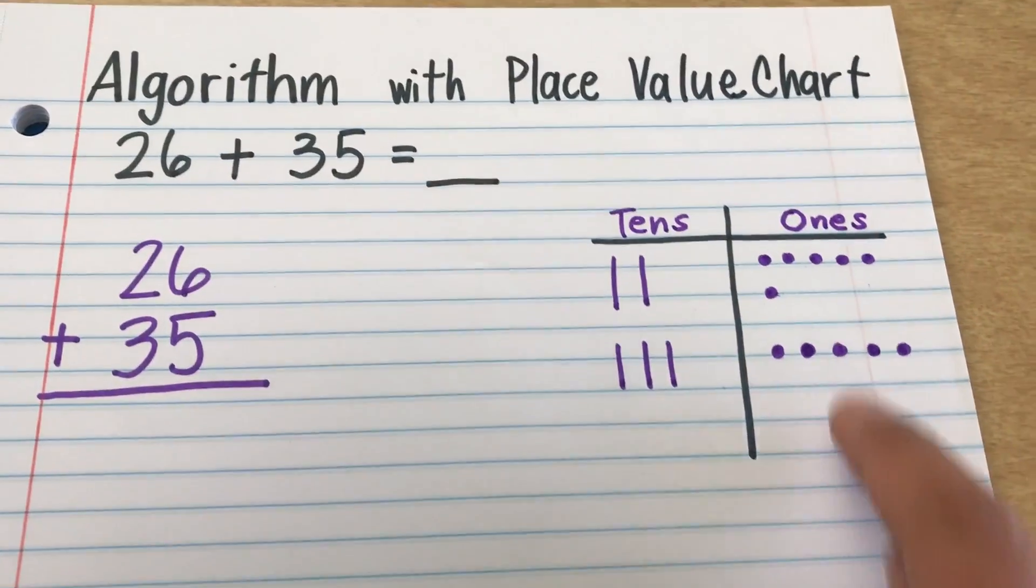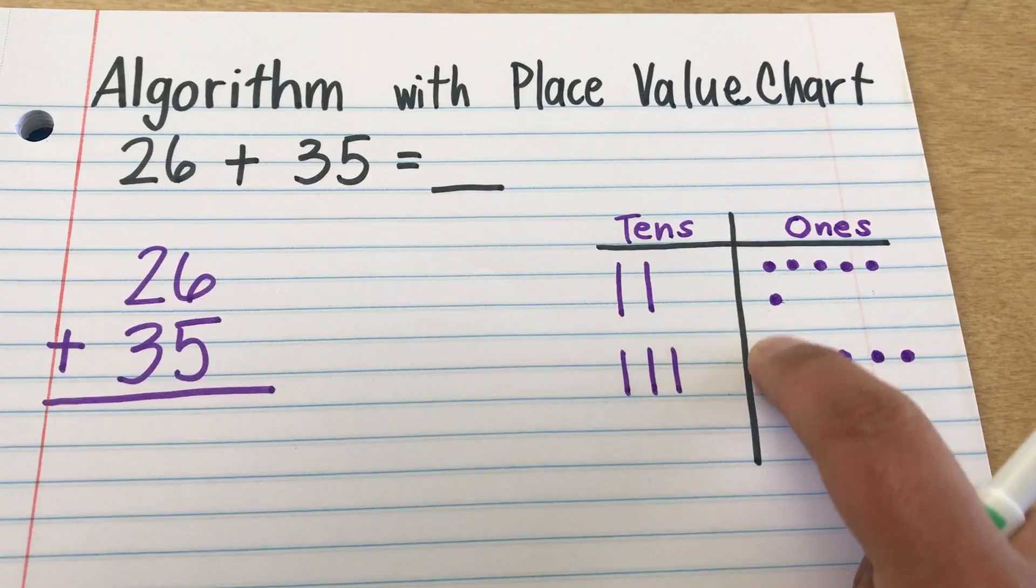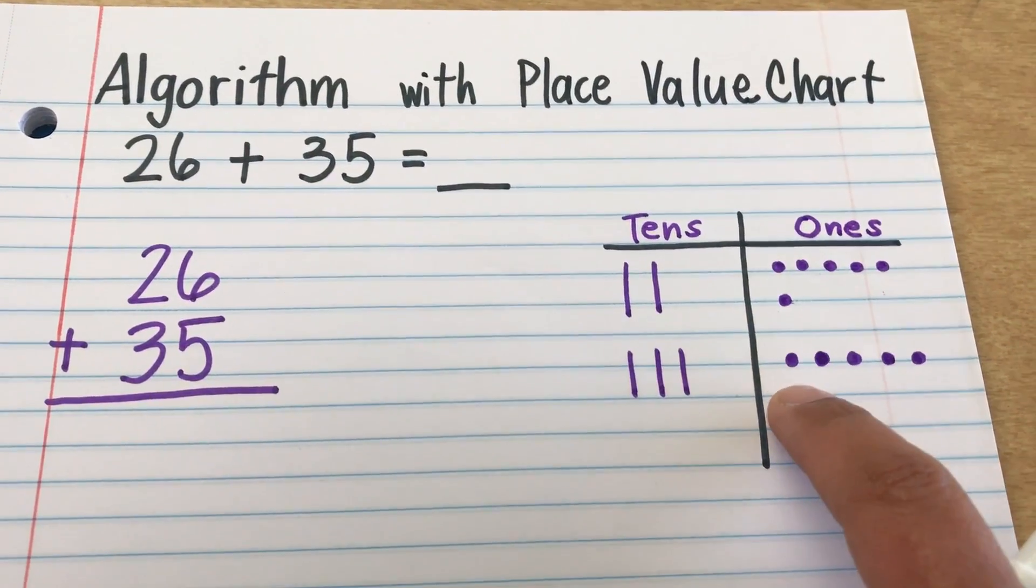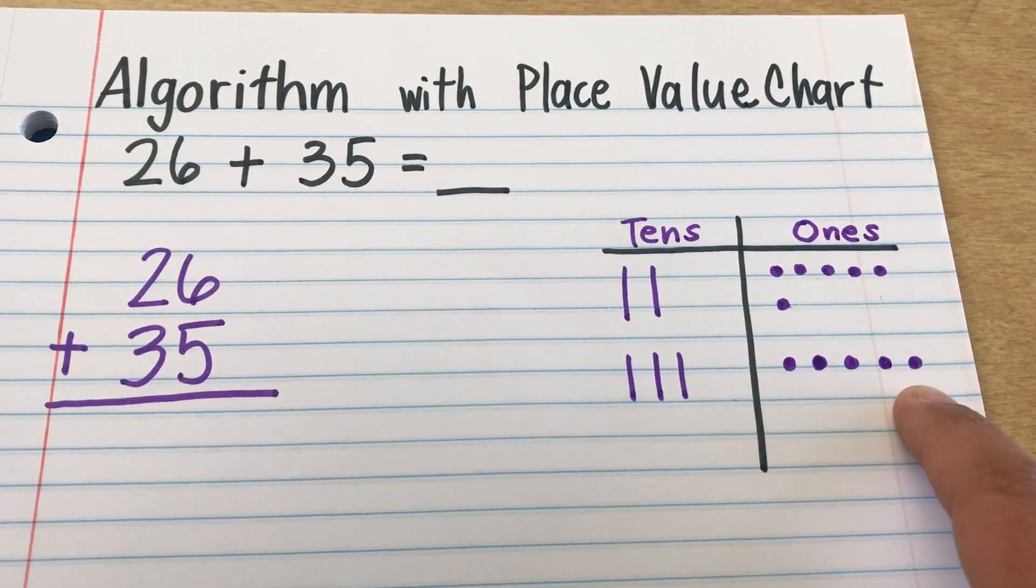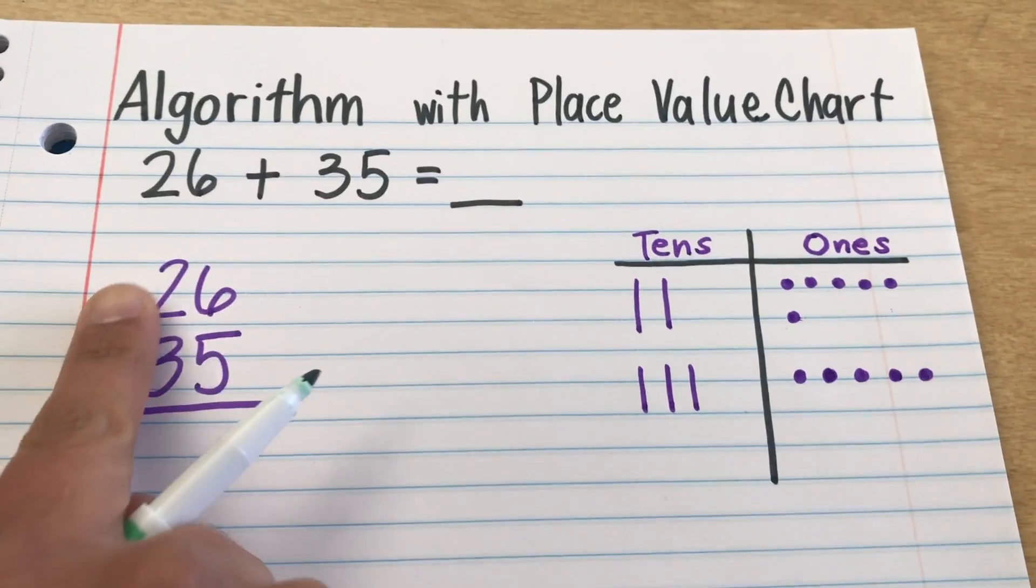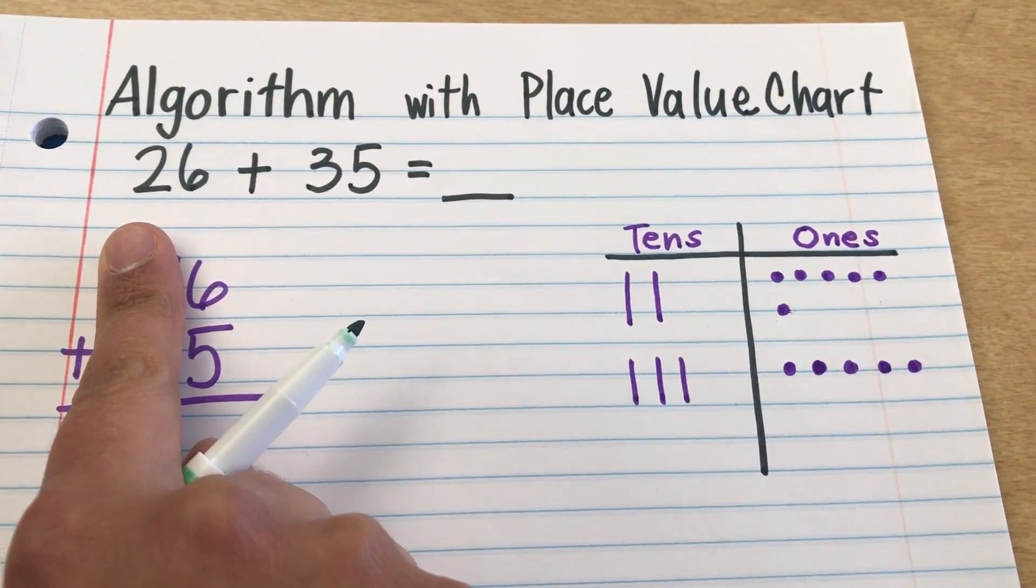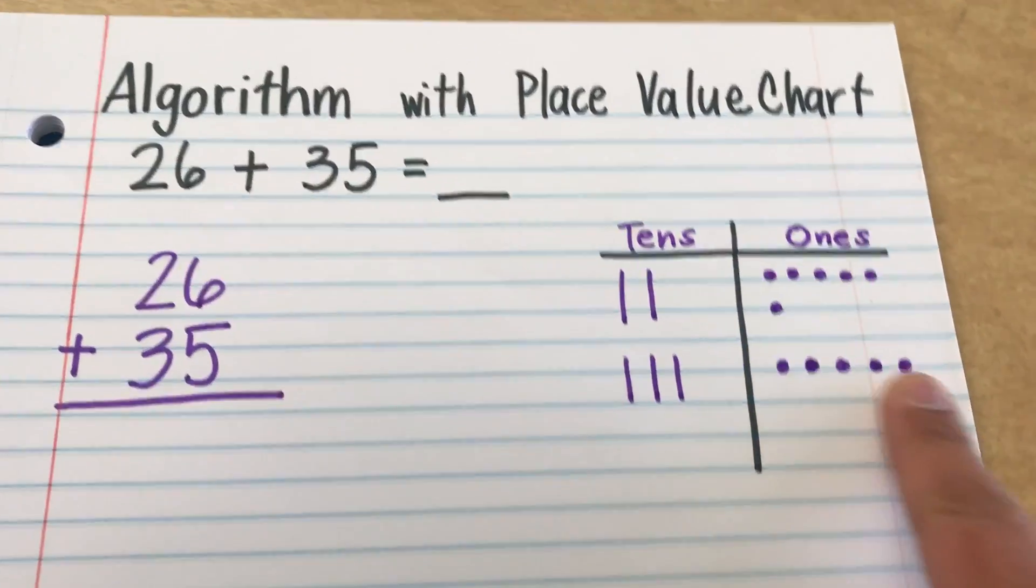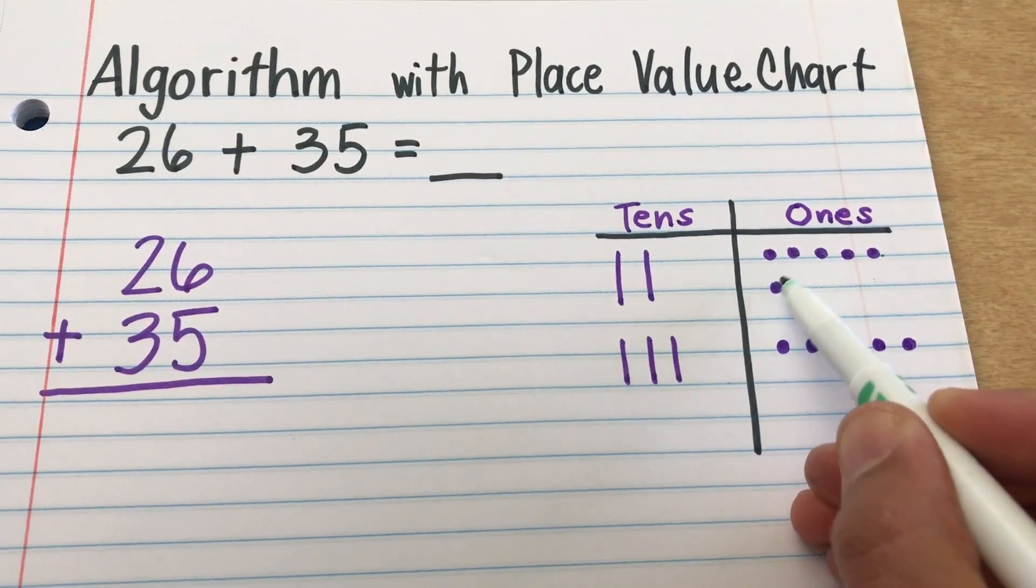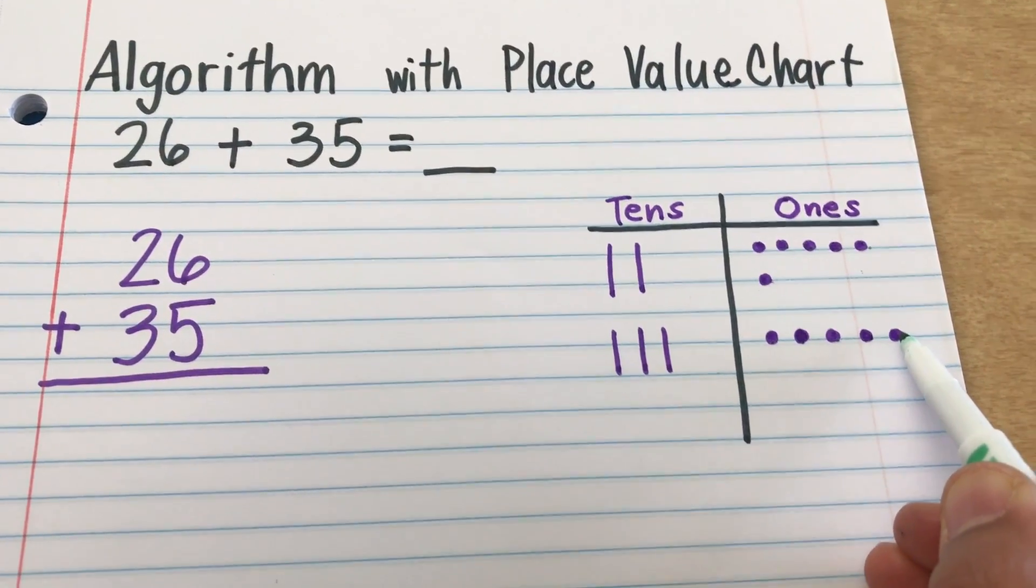I look on my 1s side. I have my 1s. On my 1s, I have 6 1s and 5 1s. Just like I have on my algorithm. 6 1s and 5 1s. We're not looking at the 10 side. I'm just looking at 6 plus 5. So, how many do I have here altogether? Let's count it. 1, 2, 3, 4, 5, 6, 7, 8, 9, 10, 11.